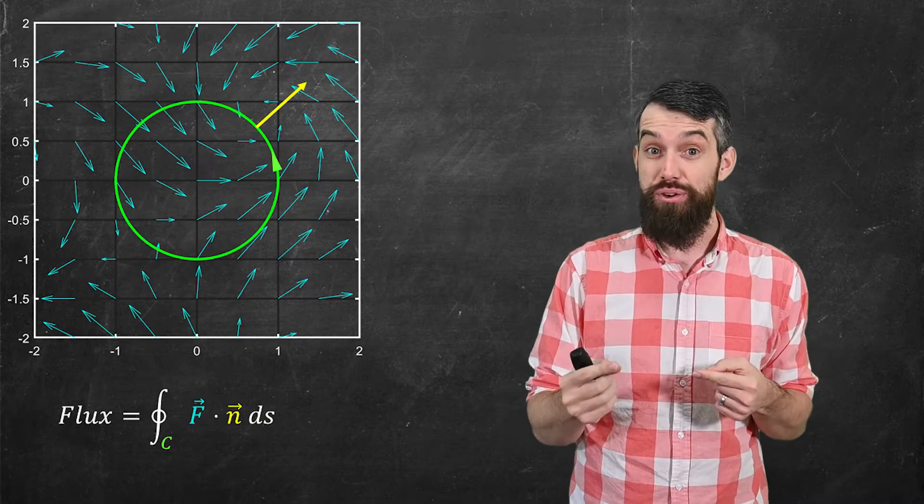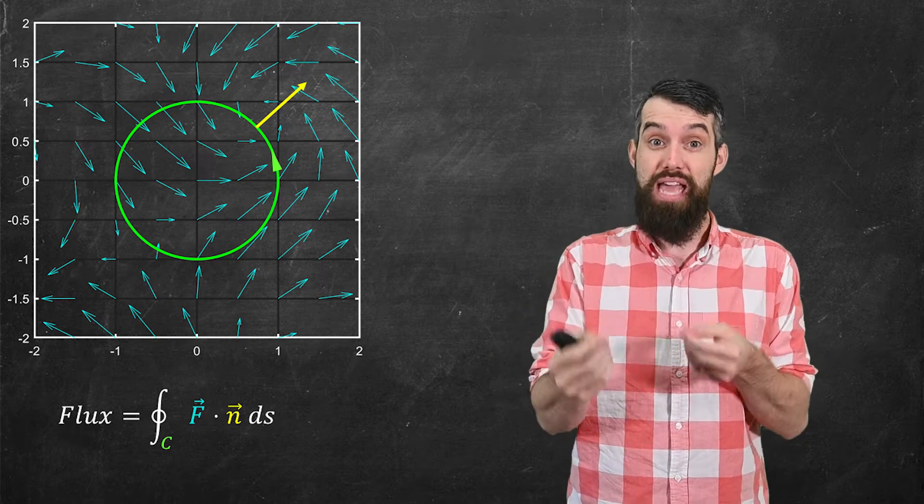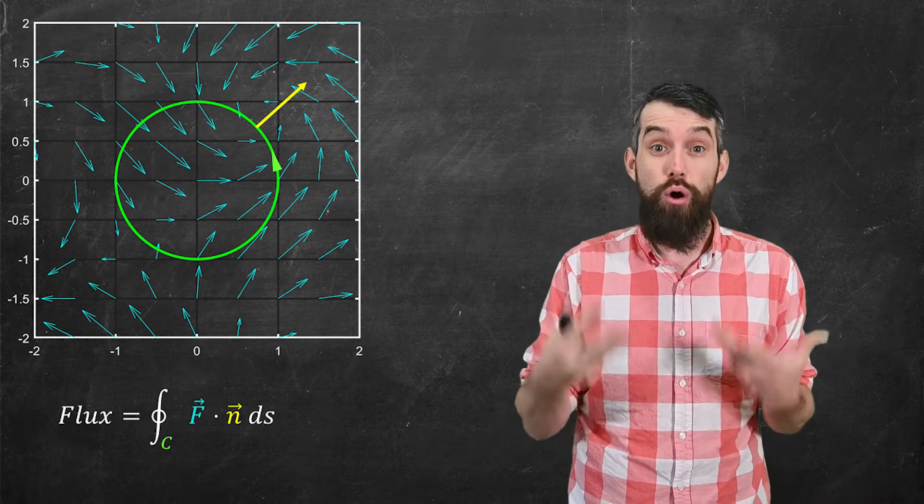And the question is, to what degree is the vector field crossing outwards across this particular curve? And we've seen that this line integral, the integral along the curve of f dot n ds, was going to represent our outward flux.